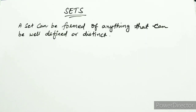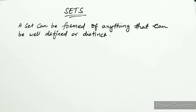So the general meaning of a set is: a collection of things that have something in common. How will you form a set? A set can be formed of anything that can be well defined or distinct. What do you mean by well defined or distinct? You can create a set of anything, but it must be well defined and distinct — unique.